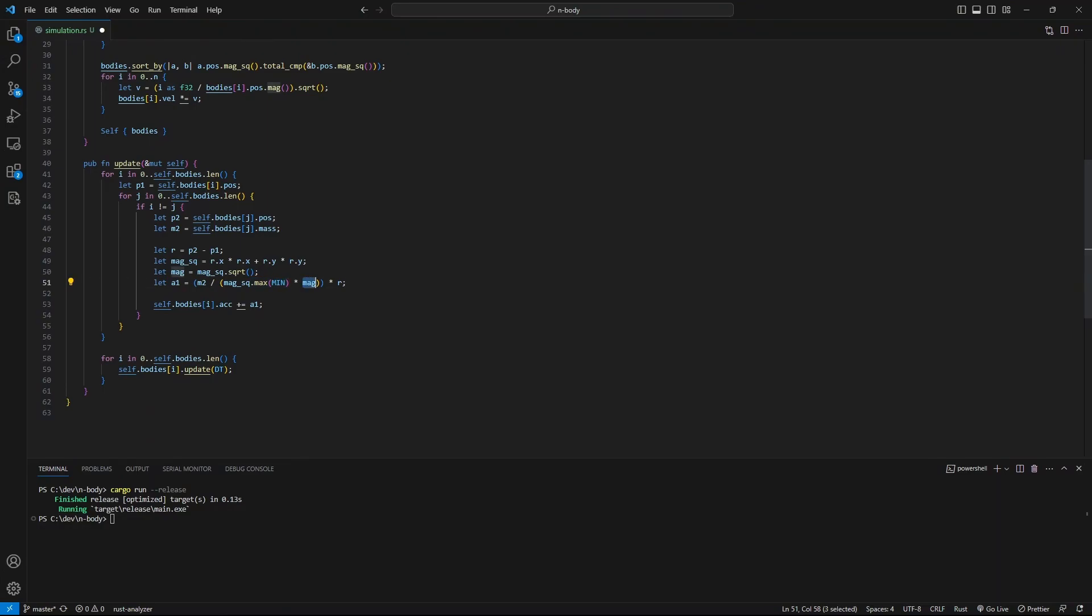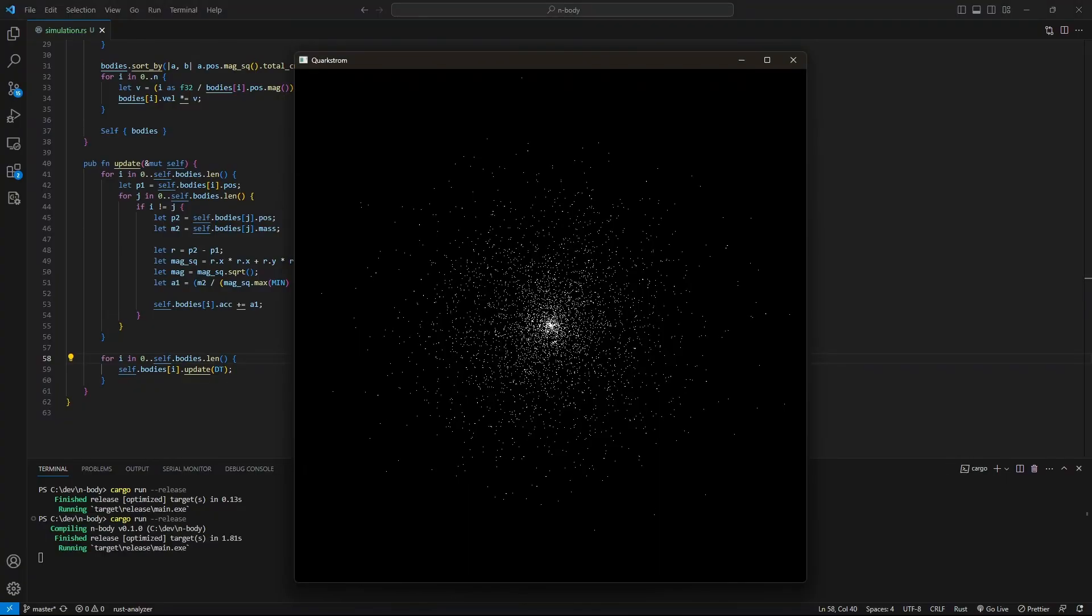This final magnitude is used to normalize the r vector and therefore should not be limited. And running this now, we see that it works.